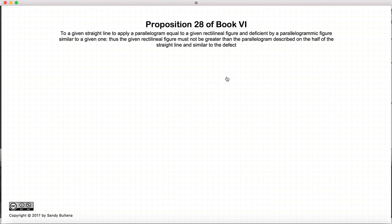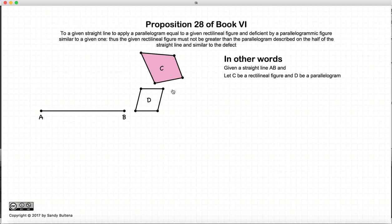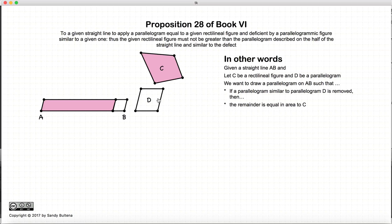This video presentation is going to be on Proposition 28 of Book 6. In this proposition, we start with a straight line AB, and we have a rectilineal figure C and a parallelogram D. Our purpose is to draw a parallelogram on AB minus a certain area that is equal to the area of a parallelogram that is drawn similar to D.